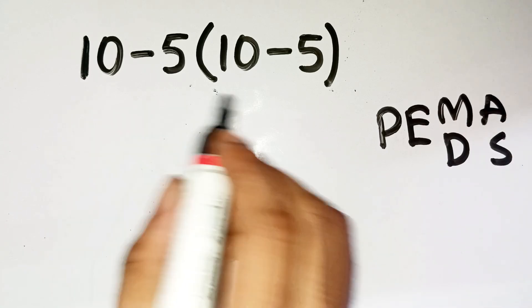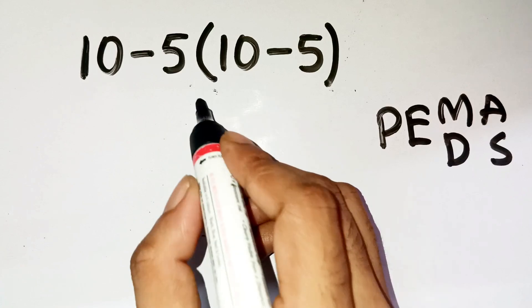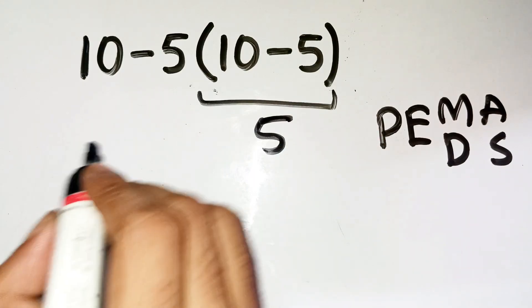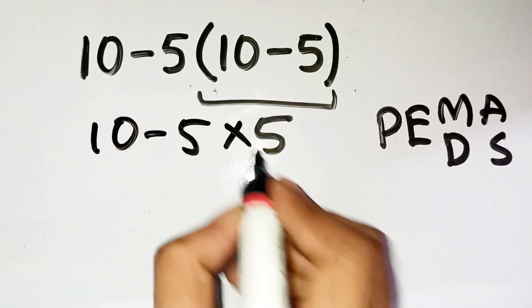Parentheses come first, so let's do that part first. Inside the bracket, 10 minus 5 equals 5. Cool. So now, the problem becomes 10 minus 5 times 5.